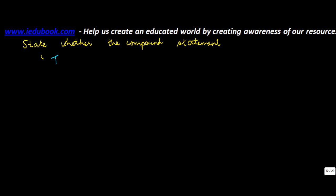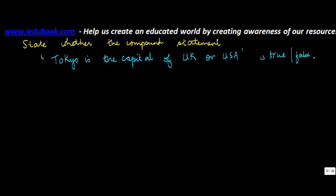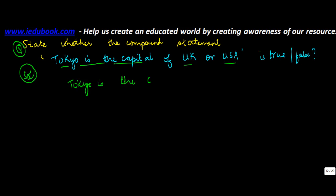State whether the compound statement 'Tokyo is the capital of UK or USA' is true or false. Now, the two statements here are: 'Tokyo is the capital of UK' and 'Tokyo is the capital of USA,' and these are connected by OR.